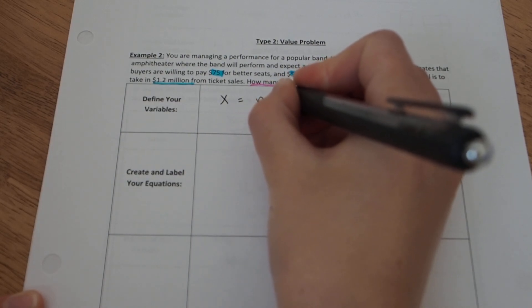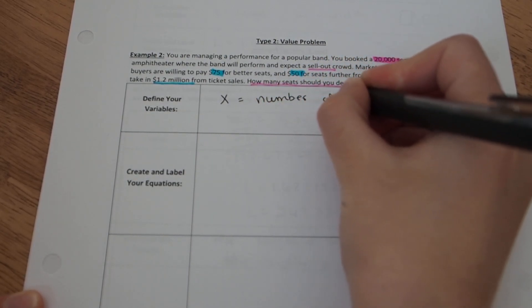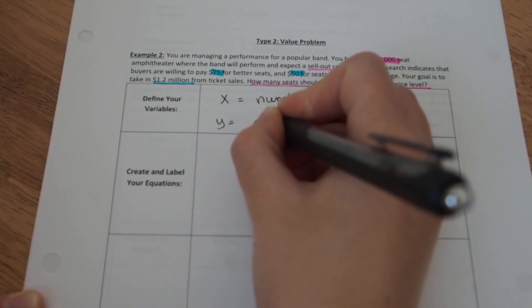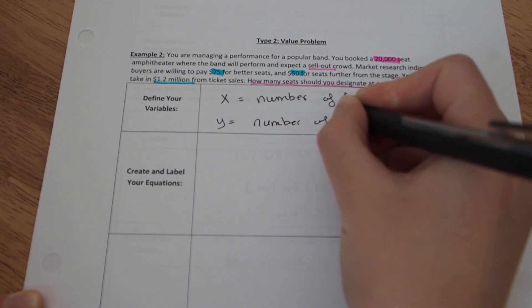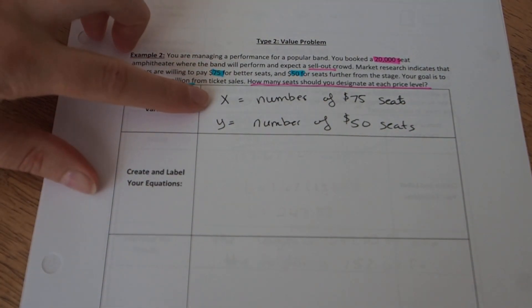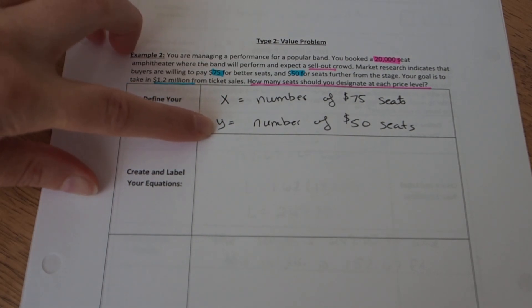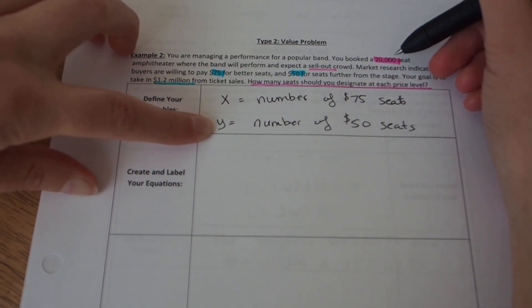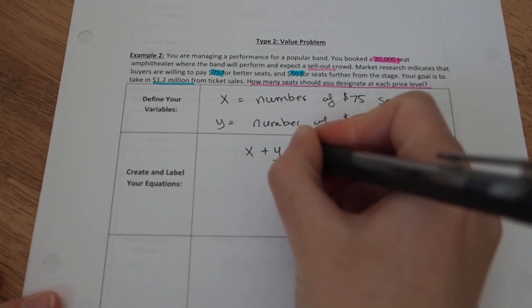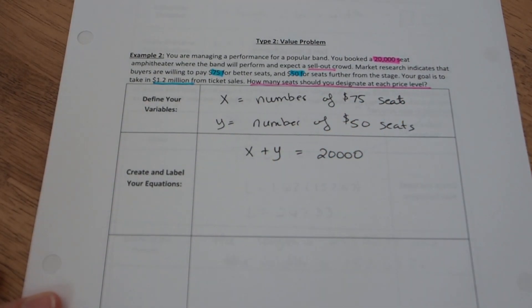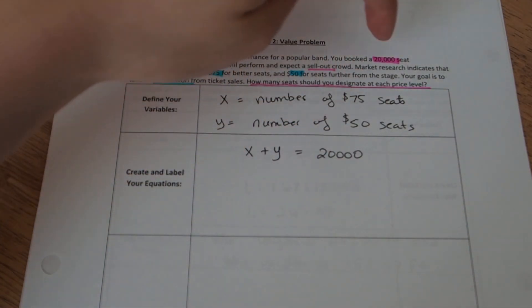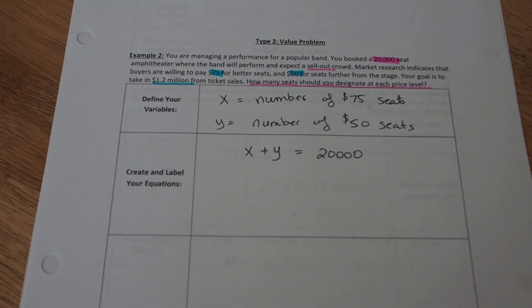I'm just going to use letters X and Y. X equals the number of $75 seats. And we'll let Y equal the number of $50 seats. Now, if the number of $75 seats is X and the number of $50 seats is Y, and we want to sell out the entire 20,000 seats, then the sum X plus Y has to total 20,000. Does that make sense? We're trying to sell them all out, don't want there to be any seats vacant, so all the seats added together needs to equal the total number of seats in the arena.